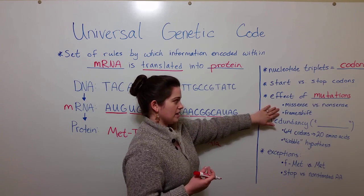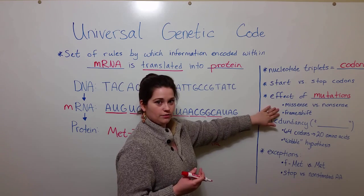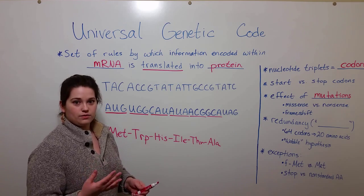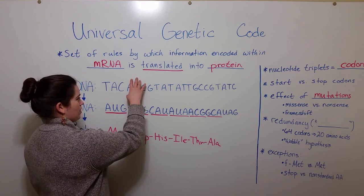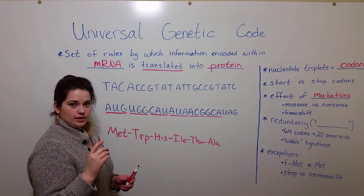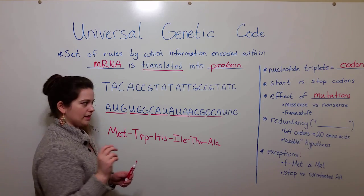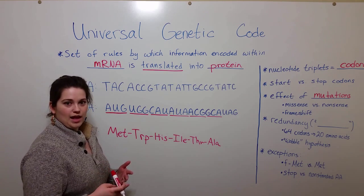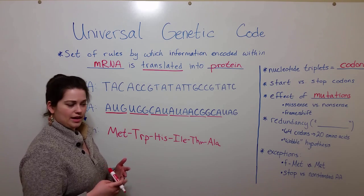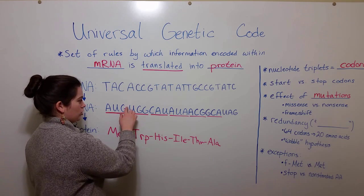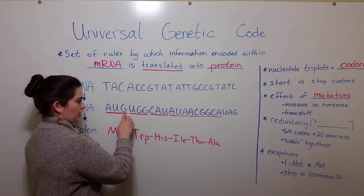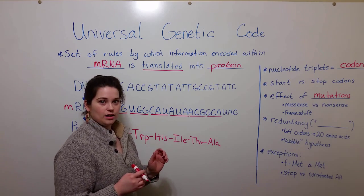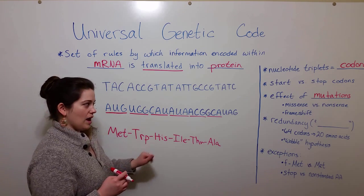An even more severe type of mutation is a frameshift mutation, which occurs when there's an insertion or deletion of nucleotides. If in the original DNA sequence there is an insertion or deletion of one or two nucleotides, that's going to throw off all of the codons because of the non-overlapping codon language. Any extra nucleotides inserted would cause all of the later amino acids to be read incorrectly.